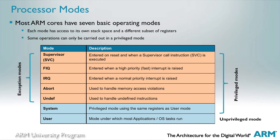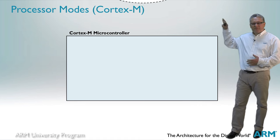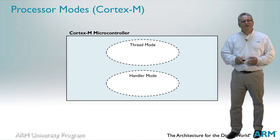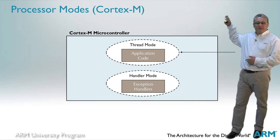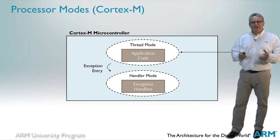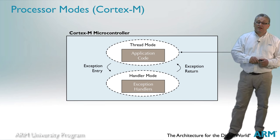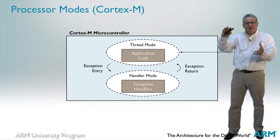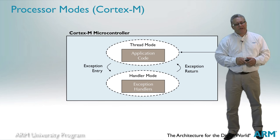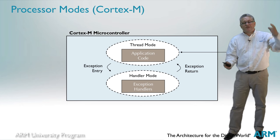Note that this mode structure really only applies to Cortex-A and Cortex-R. The ARMv7 microcontroller profile defines just two modes: thread mode and handler mode. Thread mode is unprivileged and is used for application code. Handler mode is privileged and is used for exception handlers. When the system resets, it starts execution in thread mode and automatically changes to handler mode on an exception, then returns to thread mode when the handler completes. It's possible to configure the system so that both modes are privileged, and by default they operate on separate stacks, but you can configure the system to use only one stack.